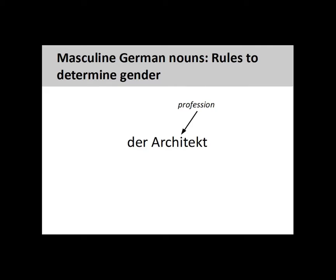Nouns describing professions, such as 'Architekt' (architect), are masculine. There is a way to form a feminine version of these nouns, which we will explore in a later presentation.